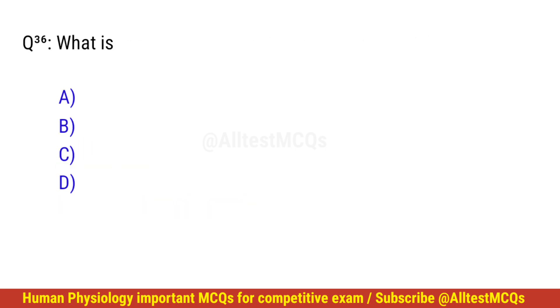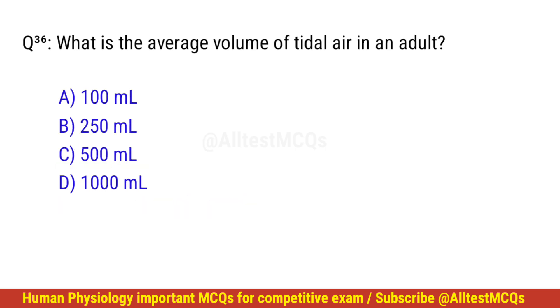Question number 36. What is the average volume of tidal air in an adult? The right option is C: 500 milliliters.